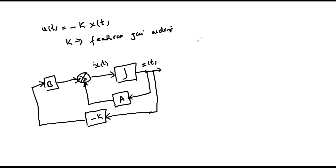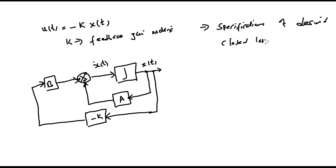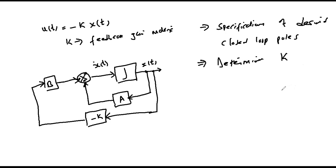The design of the controller involves the following. First, we need the specifications of the desired closed-loop poles — we need a specification that states where exactly the closed-loop poles of the resulting system should be. From there we determine our feedback gain matrix K. The necessary and sufficient condition for any given system to be designed under pole placement is that the system must be completely controllable.